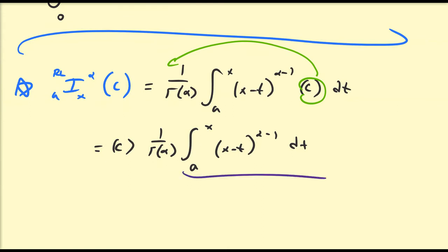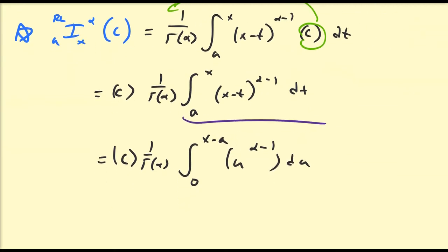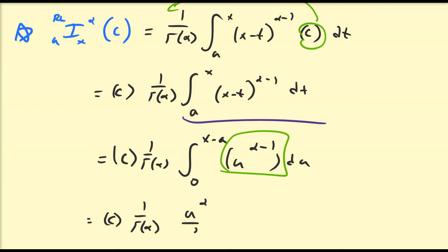So this is pretty much just a shift-to-power rule, so a quick u-substitution can easily take care of this for us. This is going to be equal to c times (1/Γ(α)) times the integral from 0 to (x − a) of u^(α−1) du. Then we can apply our power rule to this expression — it's just a normal integral of a power. So this is going to be c times (1/Γ(α)) times u^α divided by α, and then we need to evaluate this at (x − a) and at 0.